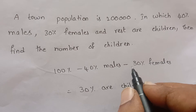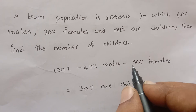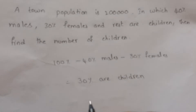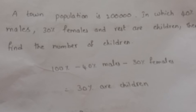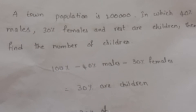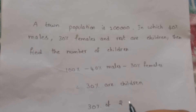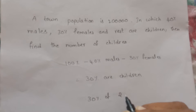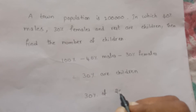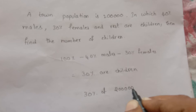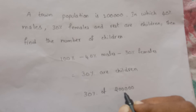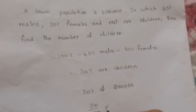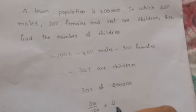100 minus 40 minus 30 equals 100 minus 70, which equals 30. So 30% are children. Now find 30% of 2 lakhs: 30 divided by 100, multiplied by 2,00,000.